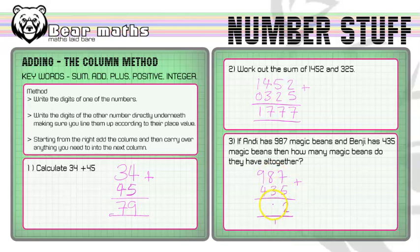8 plus 3 is 11, plus 1 is 12 again. So we have another 2 and another 1 to carry. Then 9 plus 4 is 13, plus that extra 1 is 14. There's nothing to carry on, so we put 14. Our final answer is 1422 magic beans.